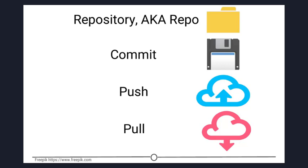Push is to update the repository with your edits. Since Git involves making changes locally, you need to be able to share your changes with the common online repository. Pushing is sending those committed changes to that repository, so now everybody has access to your edits.